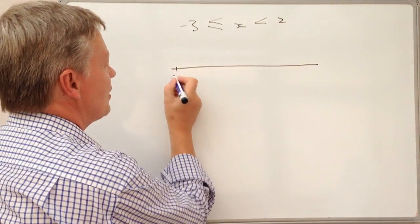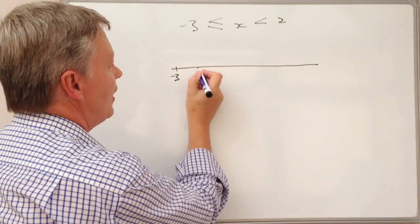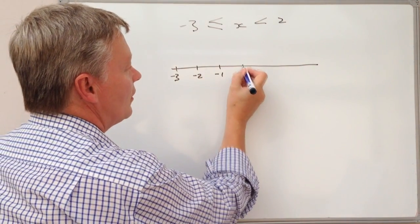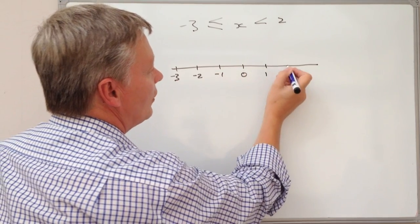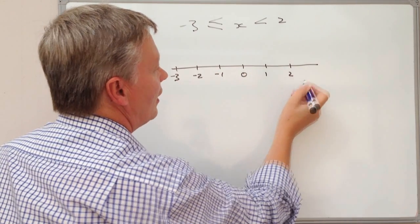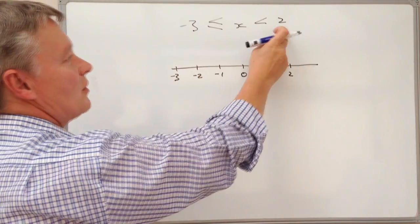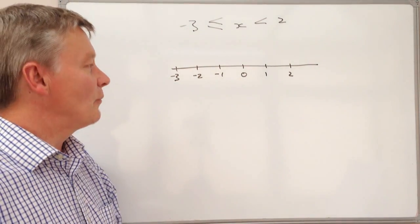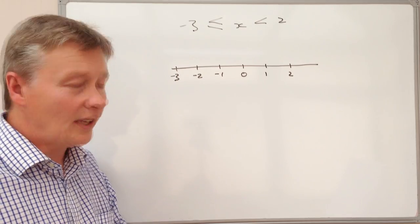So what I'll do is I'll start there at -3 and -2, -1, 0, 1, 2. There we go. So that's -3 through 2, positive 2.